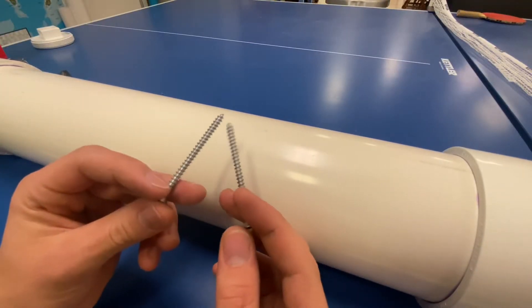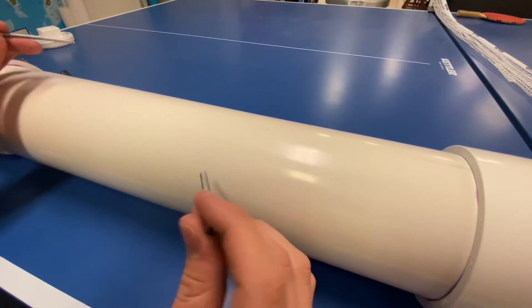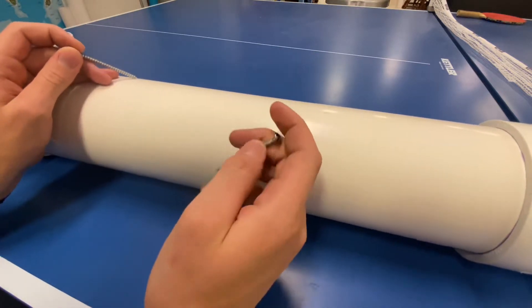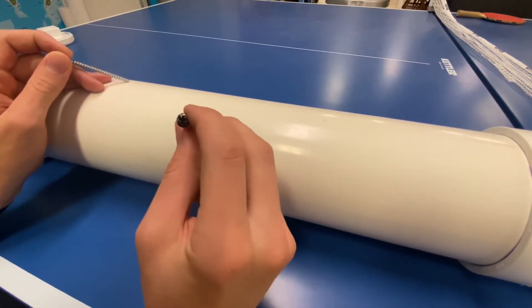Go ahead and get two screws that are pretty long. And then you're going to want to drill them into the combustion chamber. And these are going to be used for the ignition system.